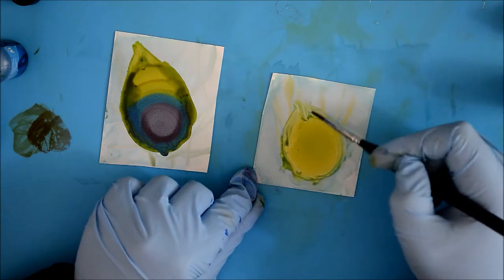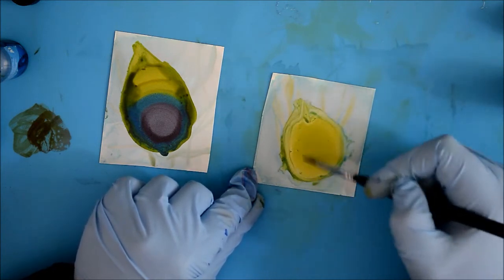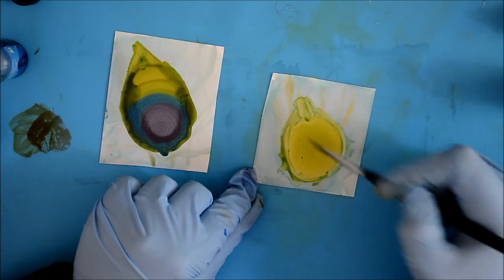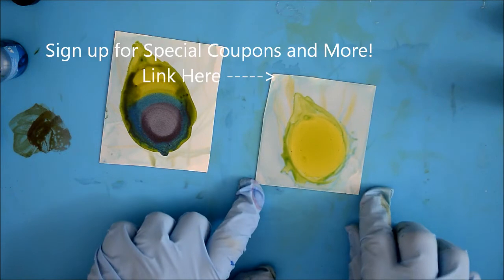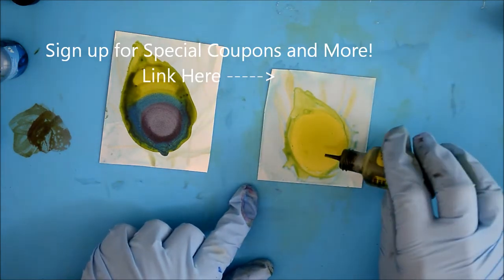And again, you can only do this while it's wet. So make sure you do this as soon as you put the dots down. So if you're doing lots of different dots, you want to work on one of them at a time. And you can also put another dot on here. So that gives it a little bit more texture.